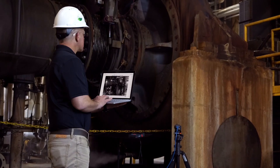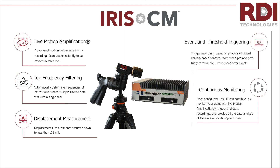The Iris-M takes all of the power of our technology platform and puts it into a continuous monitoring system capable of continuously monitoring your assets with 24/7 coverage, with live motion amplification and triggered recordings using virtual video-based sensors or connected external sensors like accelerometers, 4 to 20 milliamp signal, and TAC-based speed triggers. This powerful system can be used as a simple one-camera monitoring system or can be combined into a powerful fully scalable multi-camera network solution that monitors an entire facility in real-time with notifications and alerts.